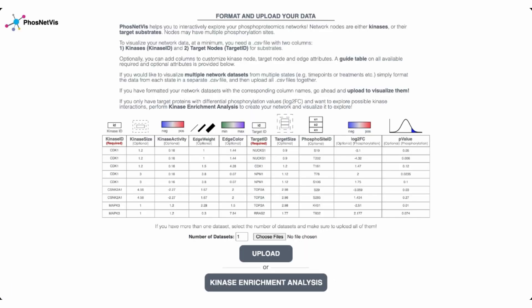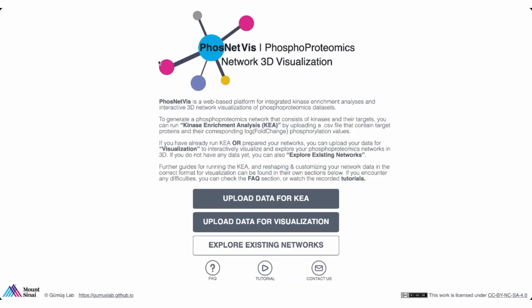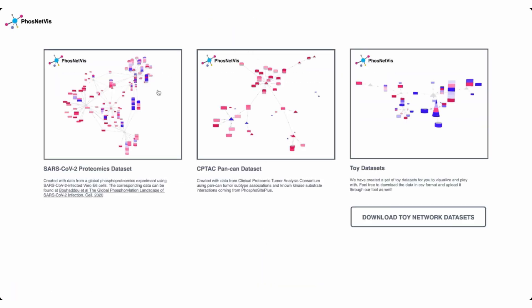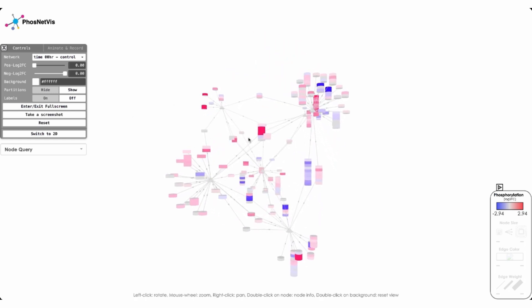And here, once the kinase enrichment analysis is run, then we can upload this information to the network visualization section. And in network visualization, the input file, all it needs is a kinase ID and a target ID that are required. All the rest of the attributes are optional. These optional attributes include kinase size, kinase activity, edge weight, edge color, target size, phosphosite ID, log twofold change of phosphorylation, and p-value of phosphorylation. And the user can input one or more data sets. And then, once the network visualization is run, I'm going to show you, for the purposes of the demo, an existing network.